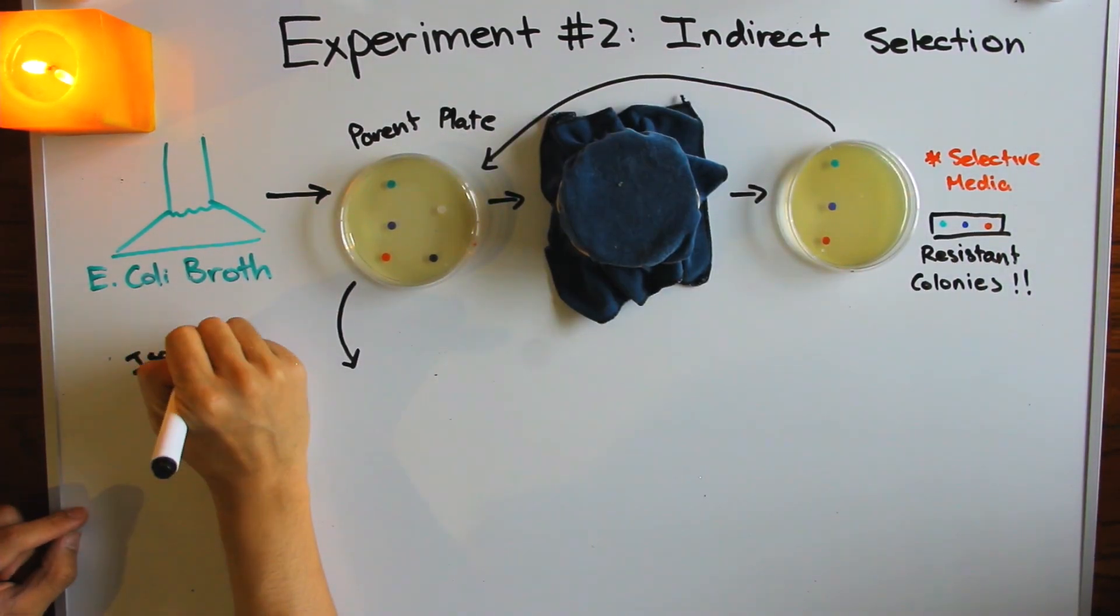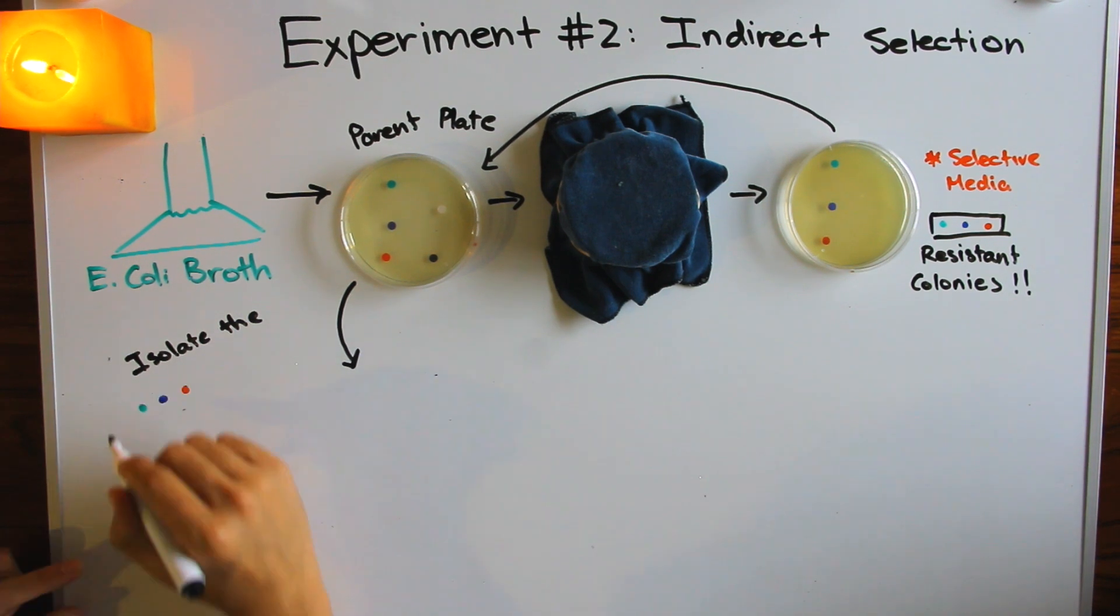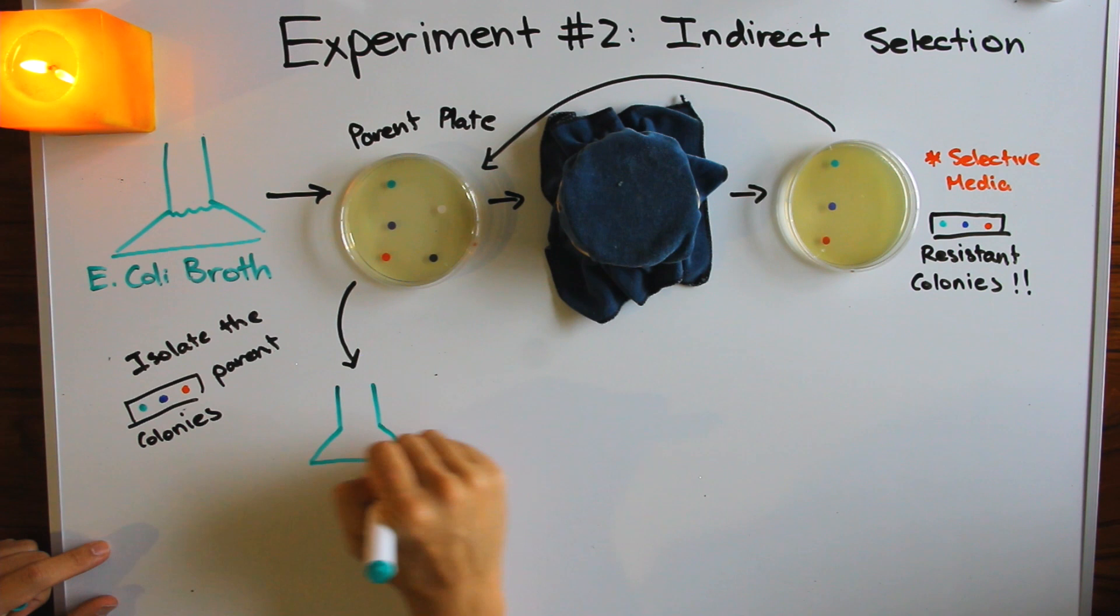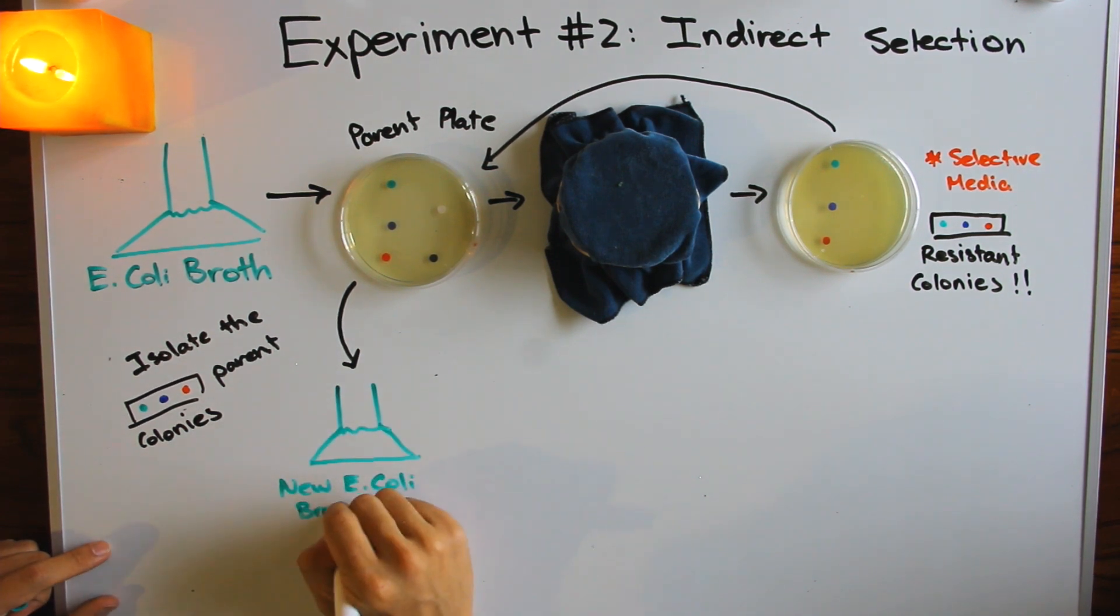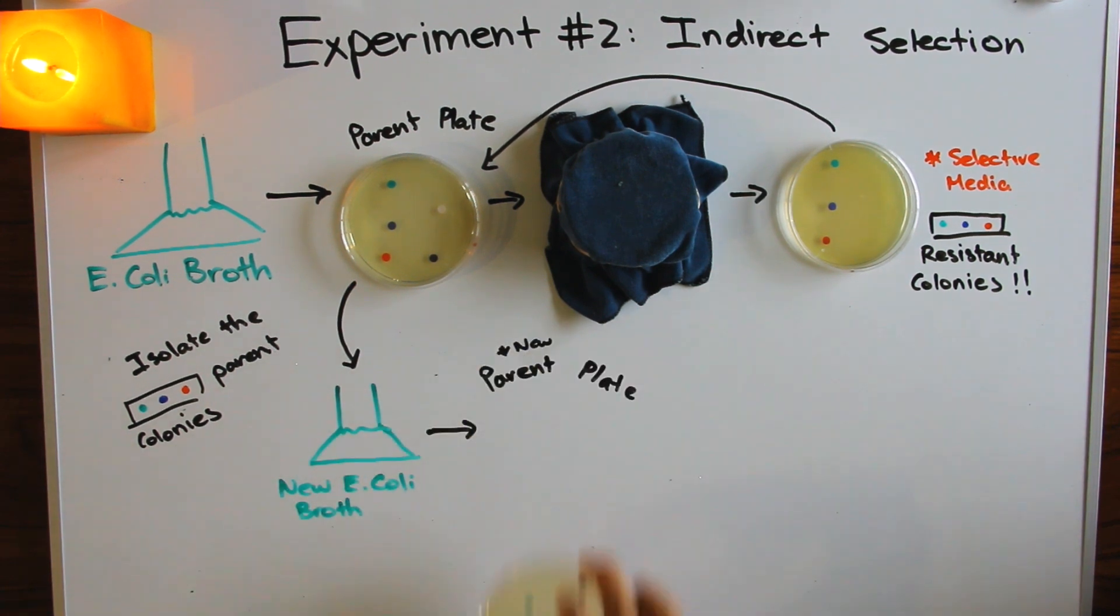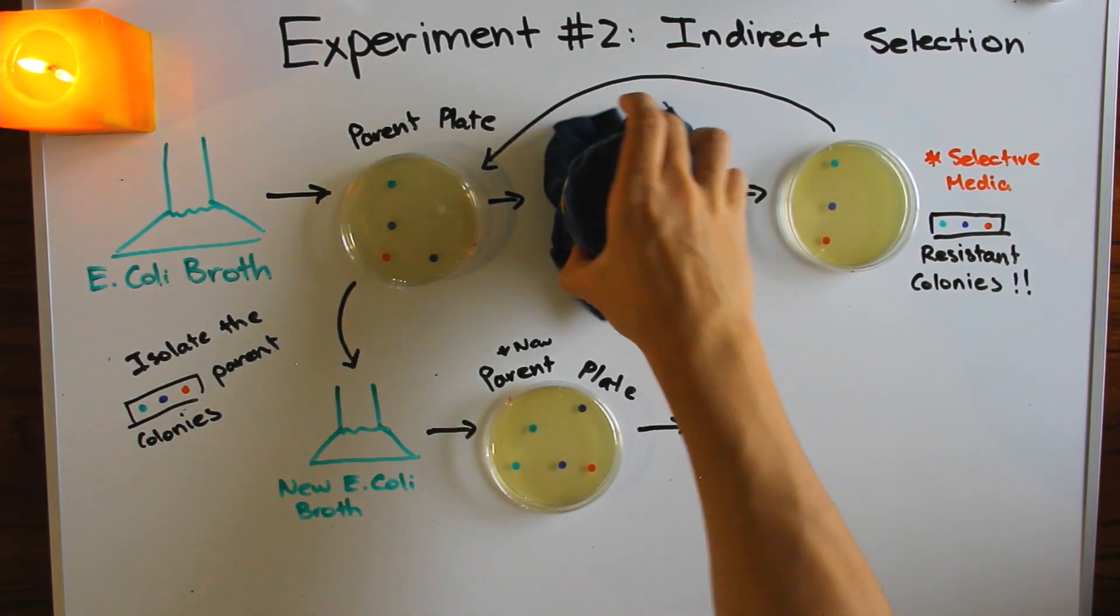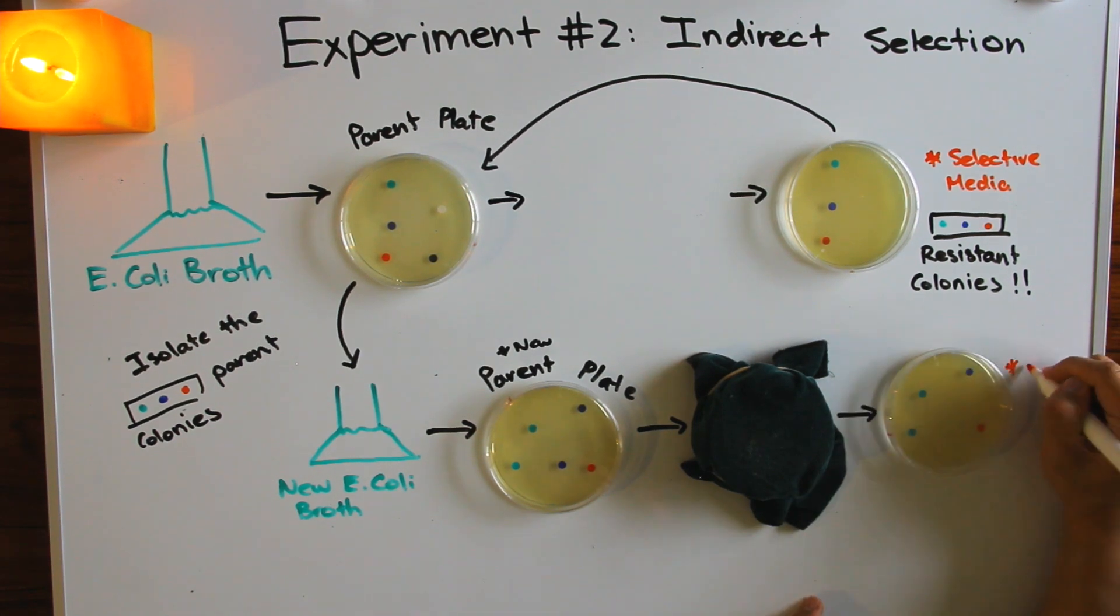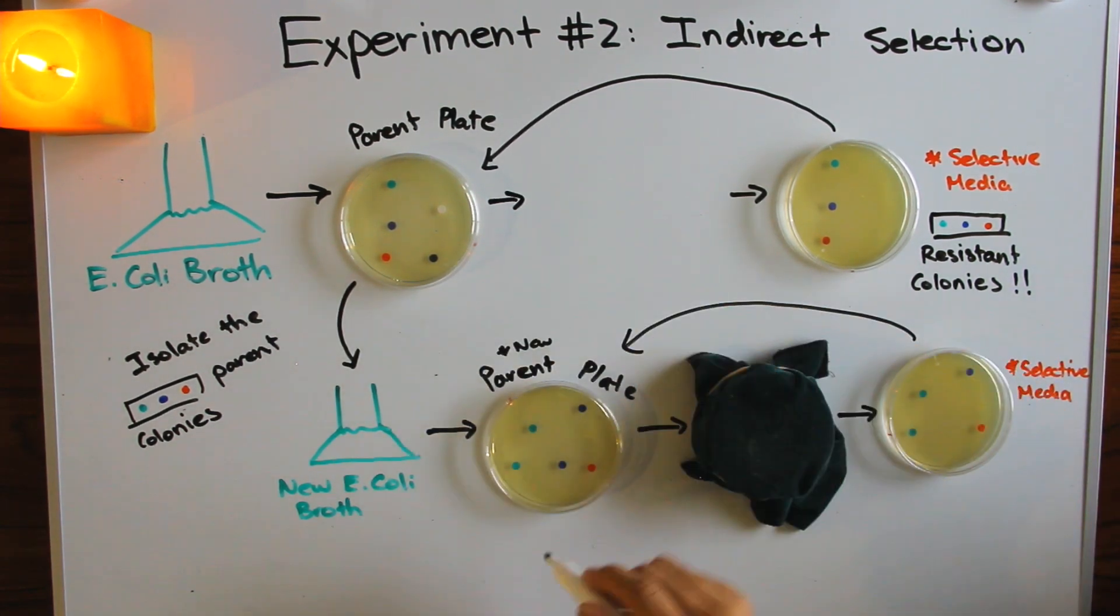Looking at where the surviving colonies are on the selective media, we can first look back at the initial agar plate and find the survivor's parents. We could then culture these parent colonies in a new broth, plate them onto another plain agar plate, and velvet replicate onto selective media. If pre-adaptation was true, then repeating this indirect selection process should concentrate more resistant colonies in the new E. coli broth.